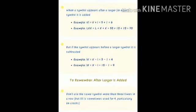But if the symbol appears before a larger symbol, then it is subtracted. For example, 5 minus 1 is equal to 4. So we will write it on the left hand side. When we add, we write the numbers on the right hand side. And when we subtract, we write the numbers on the left hand side.